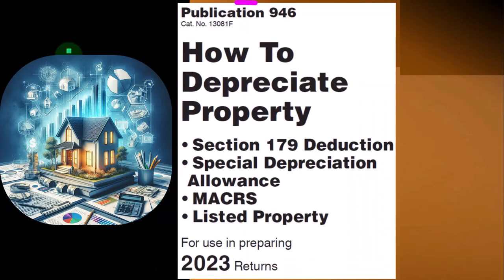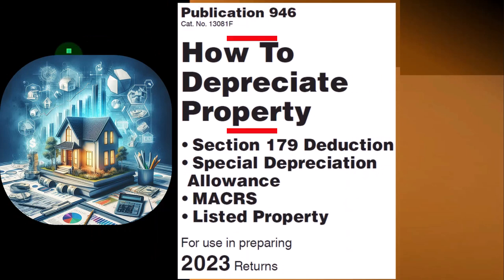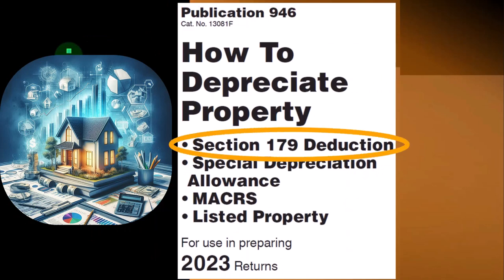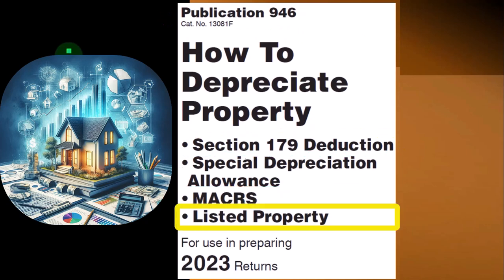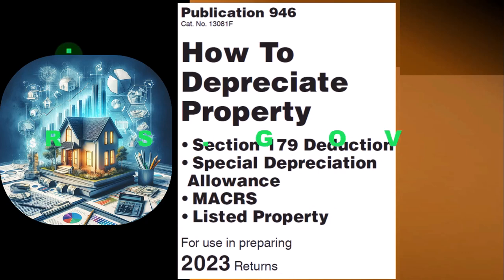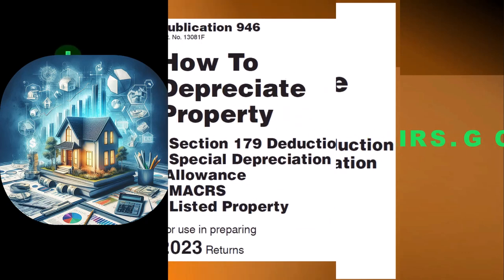This information can be found in Publication 946, 'How to Depreciate Property' — Section 179 Deduction, Special Depreciation Allowance, MACRS Listed Property, and more, for tax year 2023, which you can find on the IRS website at irs.gov.